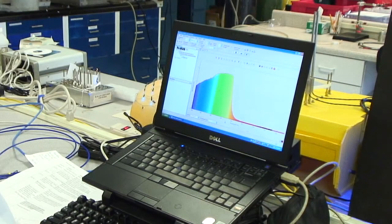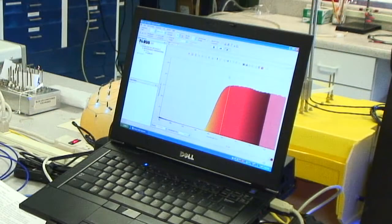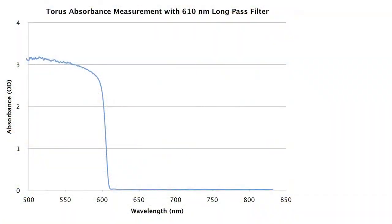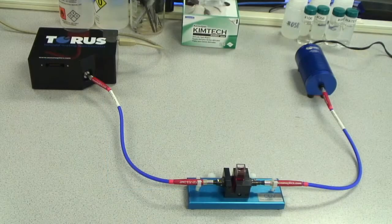It has a unique toroidal concave grating design for improved thermal wavelength stability and low stray light. With Taurus, wavelength drift is nearly eliminated and peak shape stays the same over a wide temperature range.